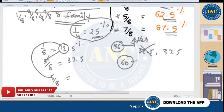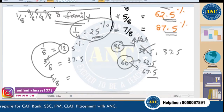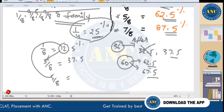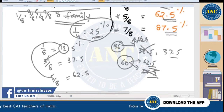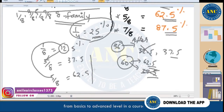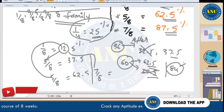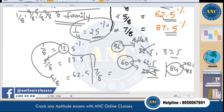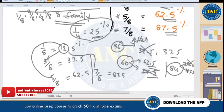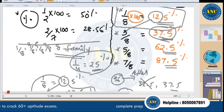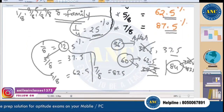Since in the 1/8 family answers must end in 2.5 or 7.5, after 60 it can only be 62.5 (not 67.5), and after 84 it must be 87.5. These are the hints to remember the values of 1/8, 3/8, 5/8, and 7/8.